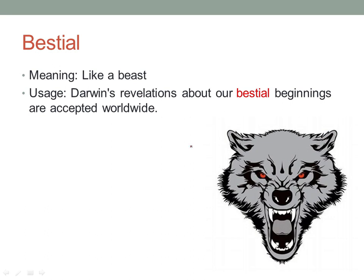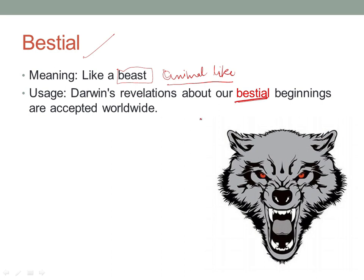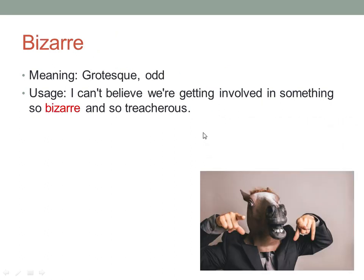The next word is 'bestial'. Bestial means like a beast or animal-like. Something or someone that is animal-like is called bestial. For example: 'Darwin's revelations about our bestial beginnings are accepted worldwide.' Darwin says we evolved from apes, which are bestial — animal-like. So those are our bestial, animal-like beginnings.